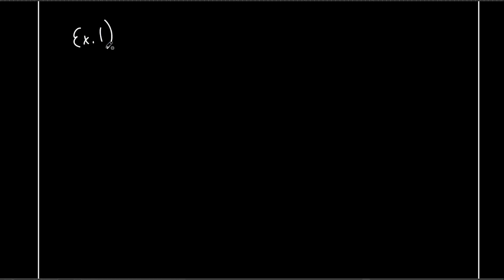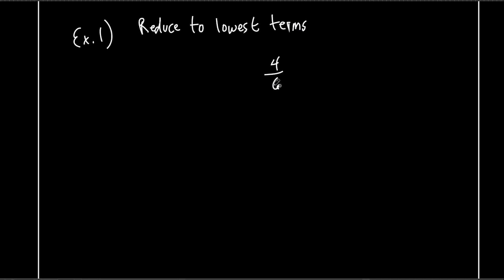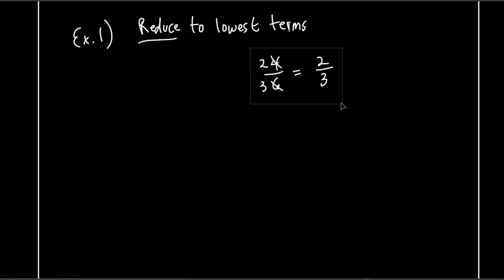Let's do Example 1 from the book — reduce to lowest terms. You've heard that a million times with fractions. Like four over six: would you leave your answer as four over six on a test? No, because your teacher always says reduce or simplify. What number divides evenly into both? Two divides into four twice and into six three times, so four-sixths becomes two-thirds.